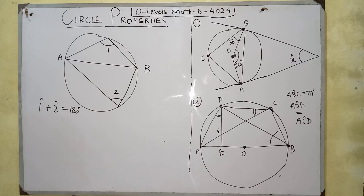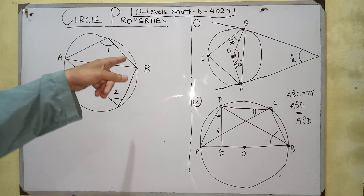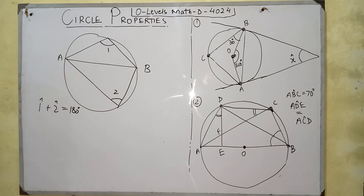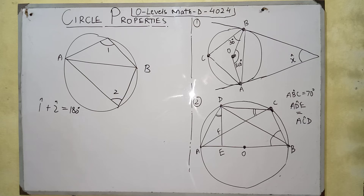Remember that this property is valid only in two conditions: the angles must be made by a chord, and all angles must be made at the circumference of the circle. If the straight line is not a chord or the angles are not at the circumference, this condition will not apply.